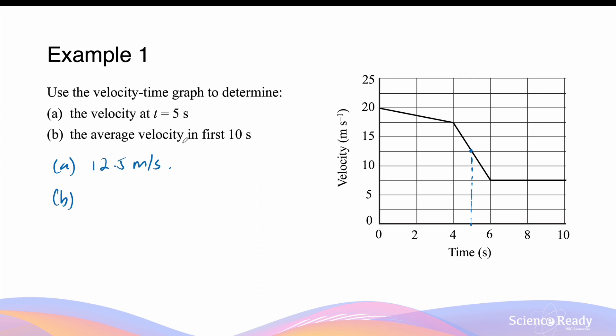What about the average velocity in the first 10 seconds? The average velocity can be easily calculated by finding the total displacement divided by the total time. We are not provided with the total displacement directly, so we will need to use the area under this velocity versus time graph to calculate the displacement.